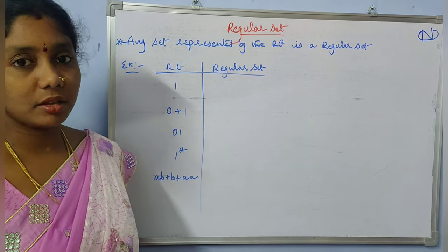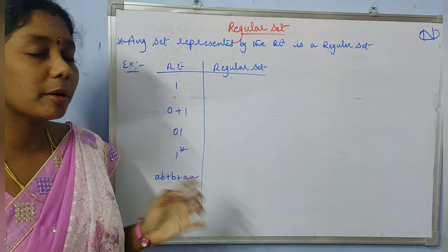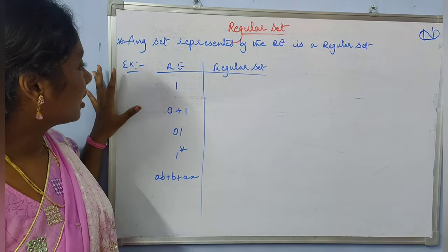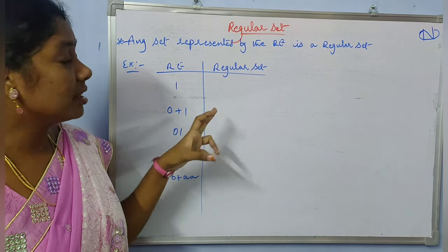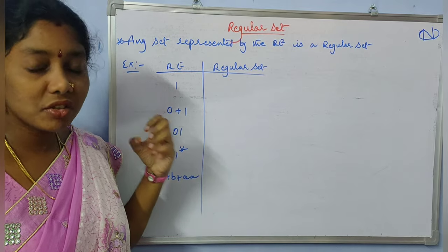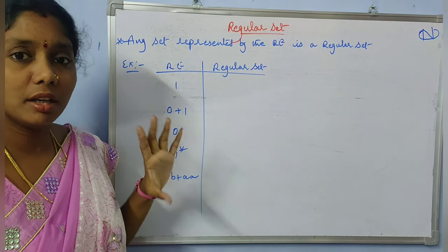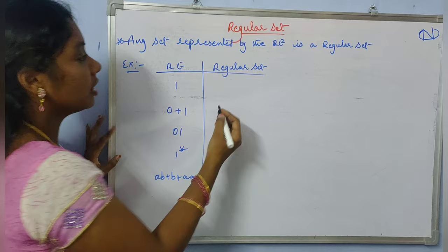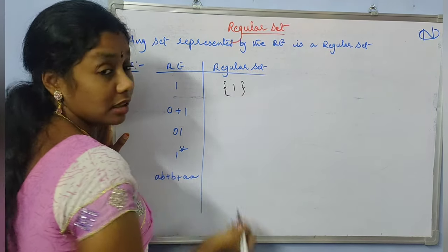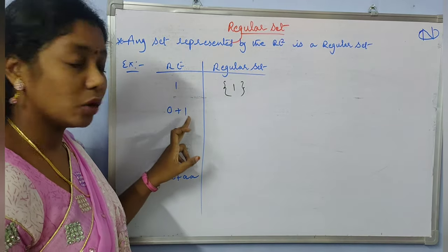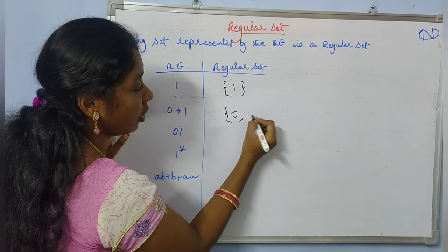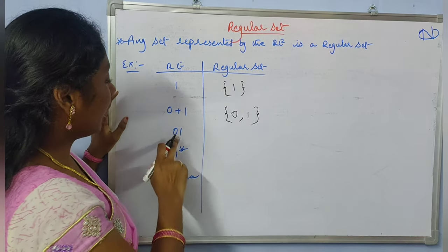Coming to regular sets: a regular set is nothing but any set represented by a regular expression. Consider an example. A regular set is a set of strings — that means a set of all the strings defined by the regular expression. Here, the only string defined by this regular expression is 1, so that is the regular set. And here, we can have either 0 or 1, so the strings defined by this regular expression is either 0 or 1 — that is the regular set.